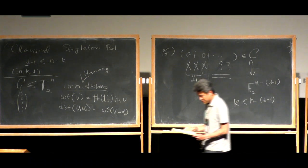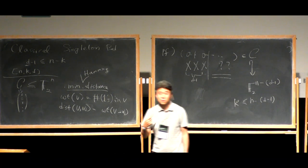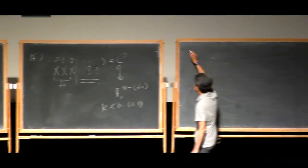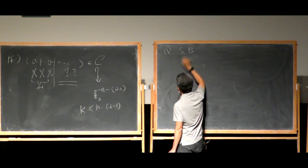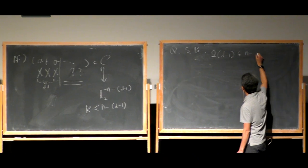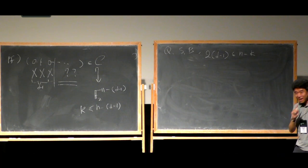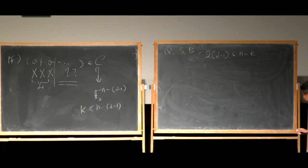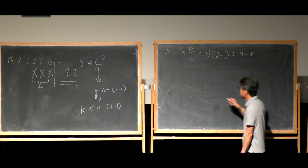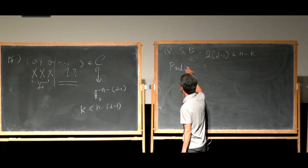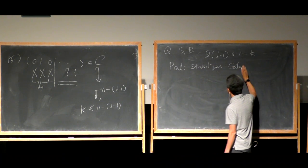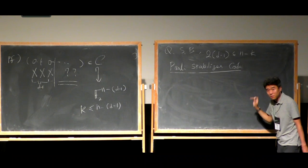Now this is a purely classical one, and there's a quantum analog. The quantum Singleton bound reads that two times D minus one is less than N minus K. I did not define what the quantum code is yet, but I'm only thinking about the Pauli stabilizer code, using the same definition as in Nicolas' talk last week.